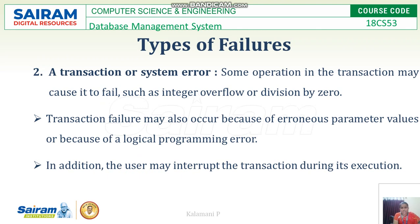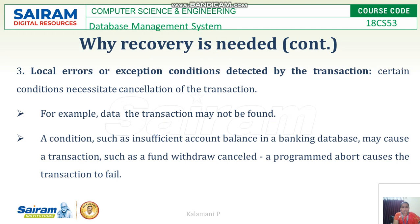A transaction or system error can cause failure, such as integer overflow or division by zero. Transaction failure may also occur due to erroneous parameter values, logical programming errors, or the user interrupting the transaction during execution. Logical errors or exception conditions detected by the transaction — such as insufficient account balance in a banking database — can also cancel the transaction.